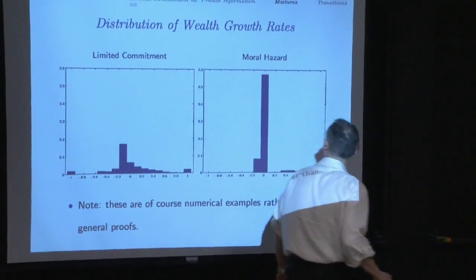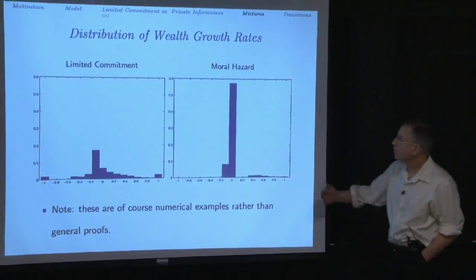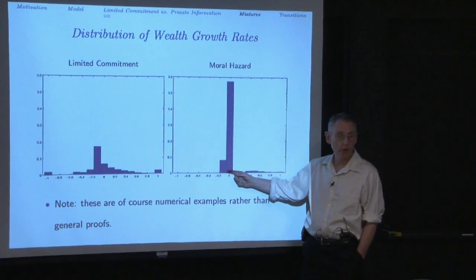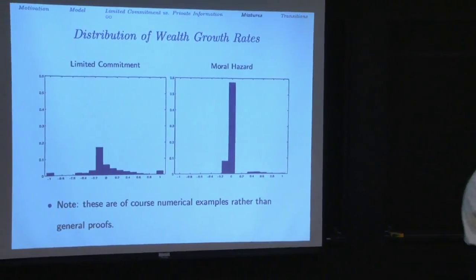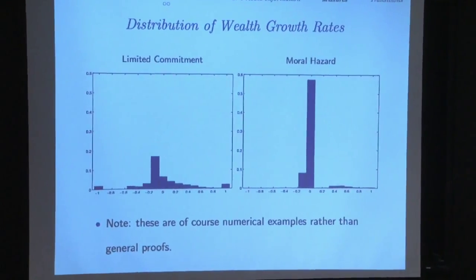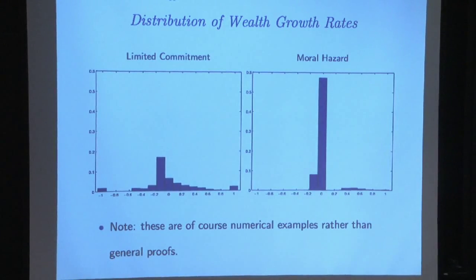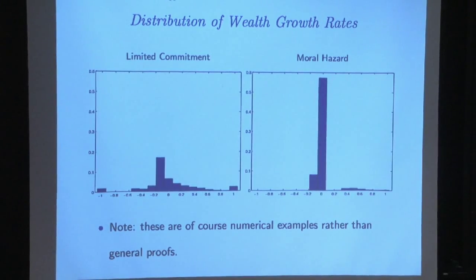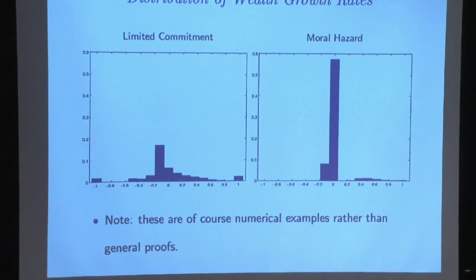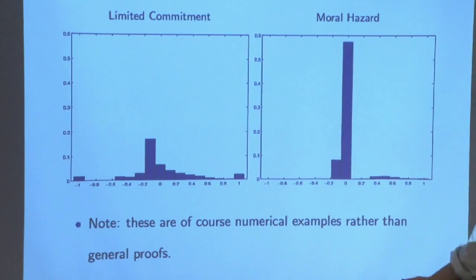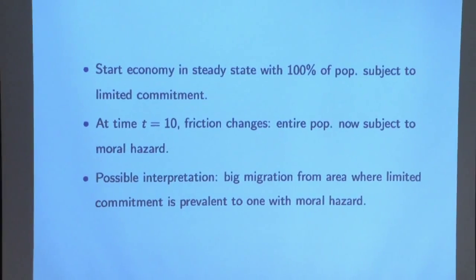Looking at growth rates: the distribution of growth rates in the moral hazard economy is very compressed — all very similar — because wealth doesn't move fast. In the limited commitment economy, there's huge dispersion in growth rates. You could go to data with this: with panel data you can look not only at static firm size distributions but growth rates to get evidence for one friction or the other.